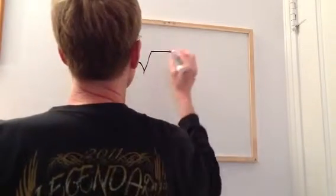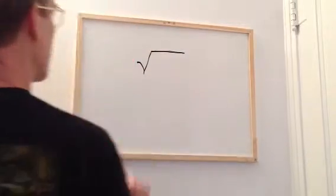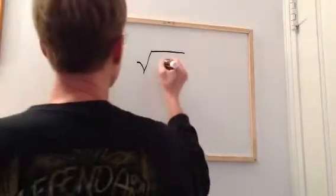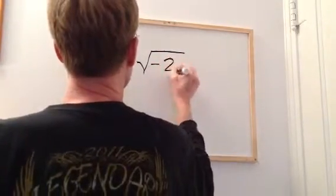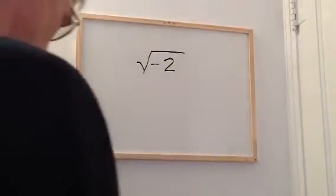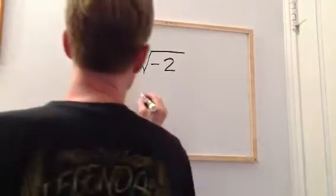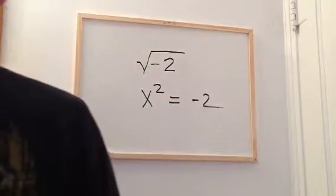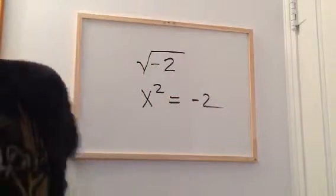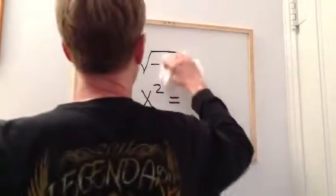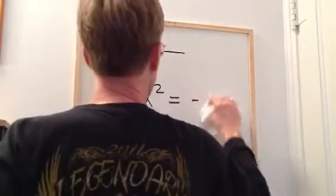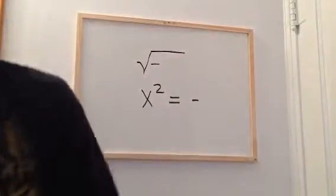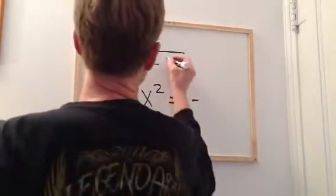But think about something like this. We already talked about the square root of two. What about the square root of minus two? What can you multiply by itself to get minus two? Or, even simpler, what about minus one? What can we multiply by itself to get minus one?